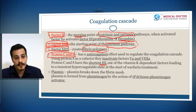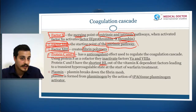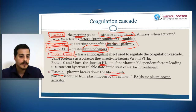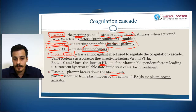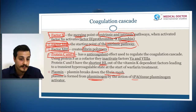Plasmin works against the coagulation cascade by breaking down the fibrin mesh itself. Plasmin is formed from plasminogen by the activation of tPA (tissue plasminogen activator).